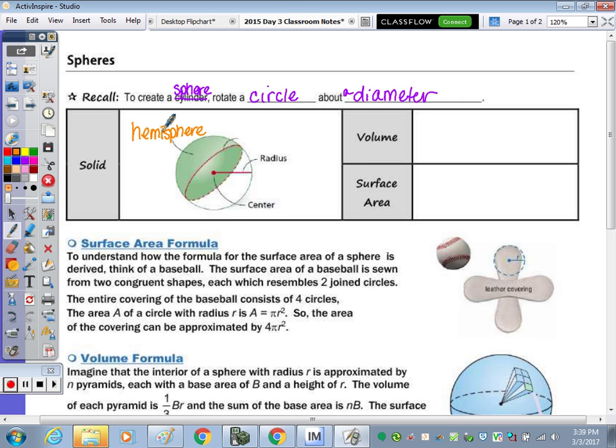This circle here, which is the largest circle of the sphere, is called the great circle. That's the circle that splits the sphere into two hemispheres. We have our radius, and then we have the center.